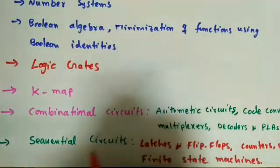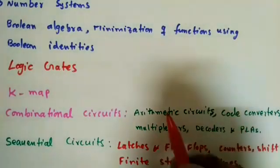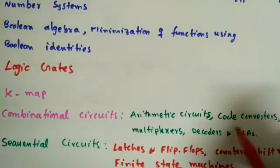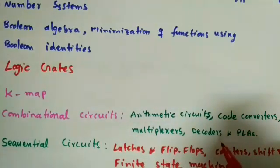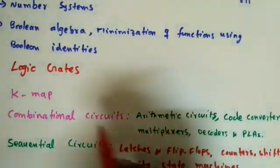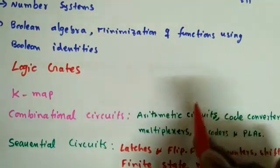The next two major topics are combinational circuits and sequential circuits. In combinational circuits, we discuss adders, subtractors, multipliers, code converters, multiplexers, decoders, programmable logic arrays, and programmable logic devices. Combinational circuits depend only on present inputs to produce present outputs.